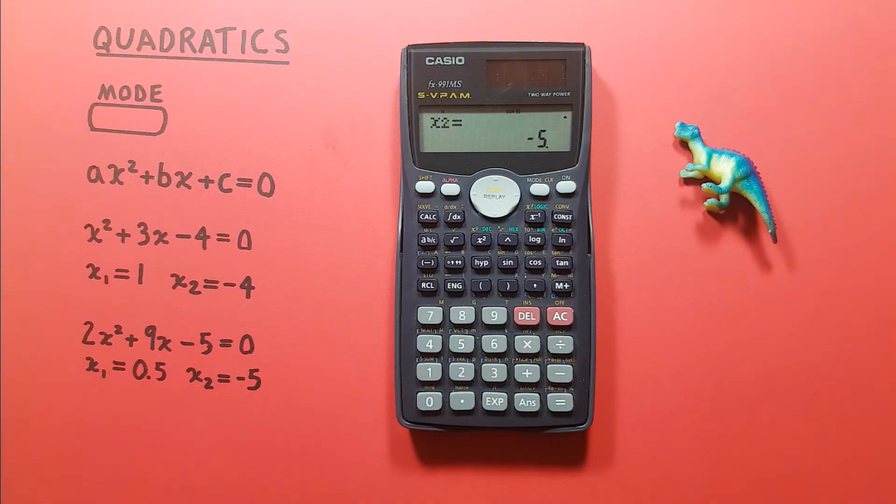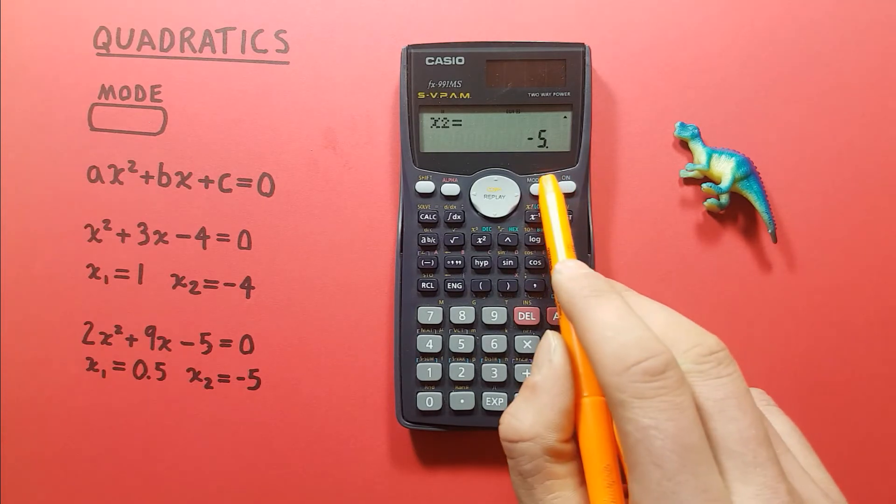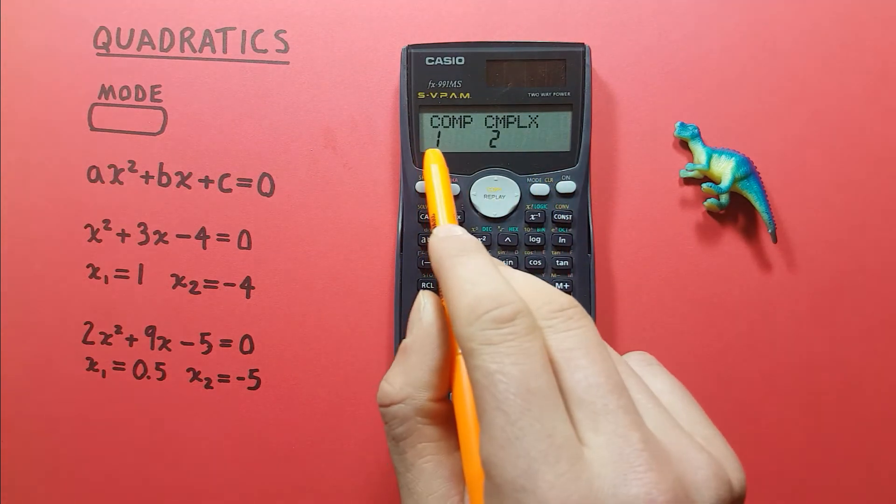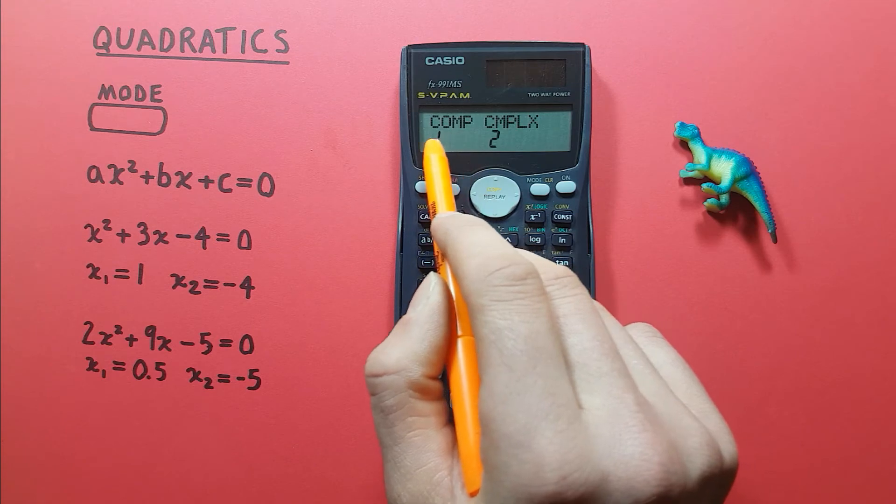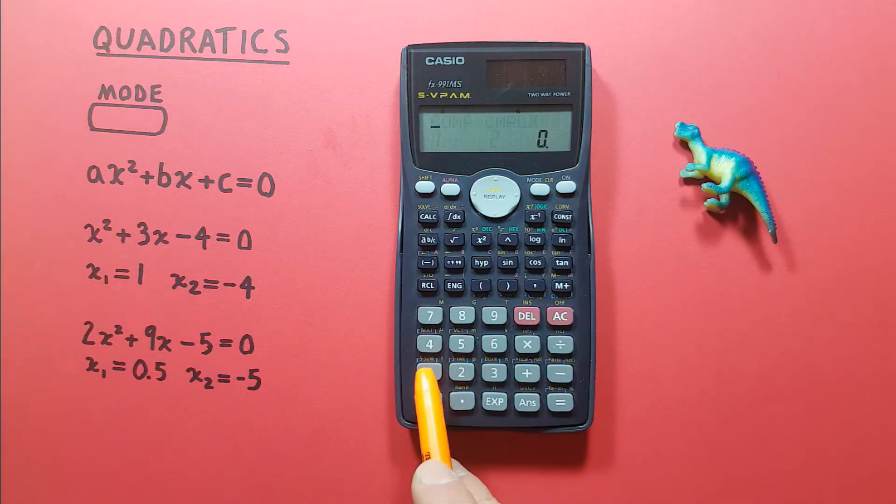And if we're done using this and we want to go back to our regular mode on our calculator, we simply press mode once to get to this menu. And then we want to go back to COMP or COMP mode. So we press 1 and we're back at our normal calculator mode and we can proceed to do any sort of calculations that we need to do.